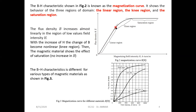In region two, when the domains start to be aligned in one direction, the variation is no longer linear — it is non-linear. We call this the knee region or non-linear region. At the end, when all the domains are aligned in one direction, the material gets saturated. B will not increase anymore, whatever you increase H. This is the saturation region.